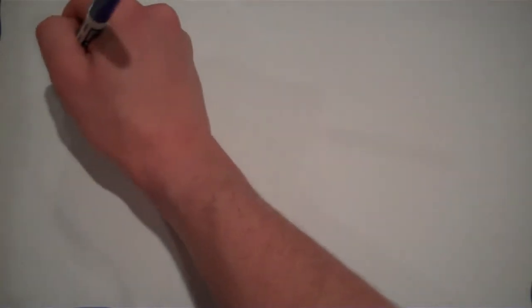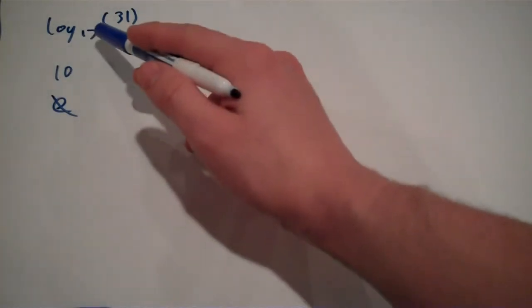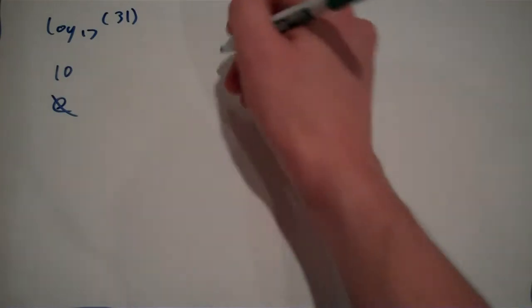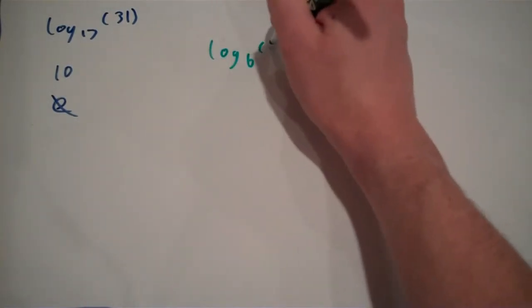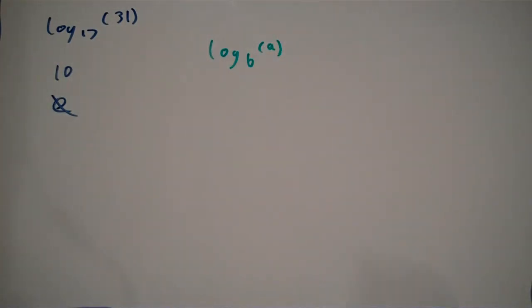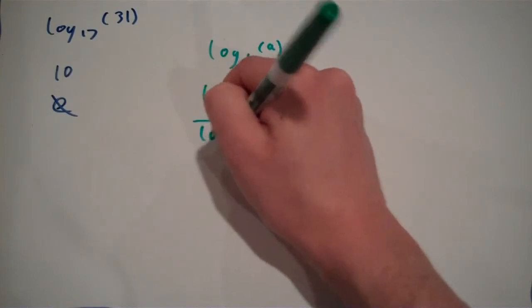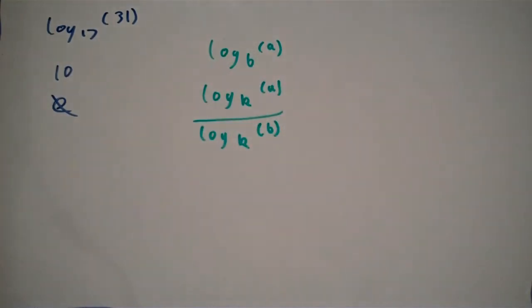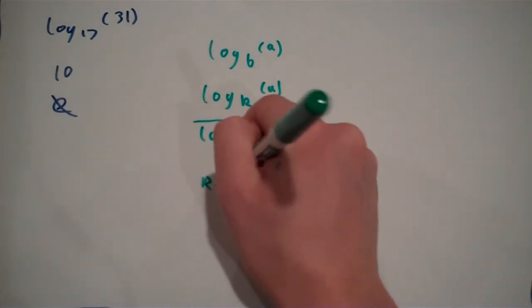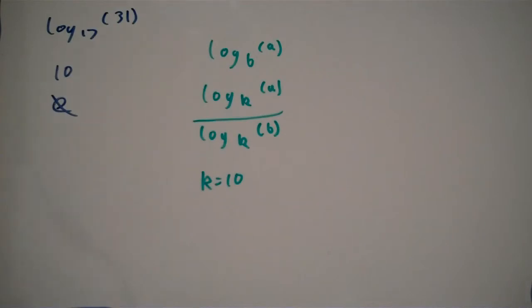However, most calculators can only do logarithms in base 10 or base e — and I'll get to e later. Since your calculator can probably only do logarithms in base 10, it can't really do log base 17 of 31. Which is where the change of base rule comes in. So, for our generic logarithm log base b of a, the change of base rule allows us to rewrite this as log base k of a over the logarithm base k of b. Because your calculator can probably only do log base 10, k often equals 10, but k can be any number.